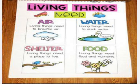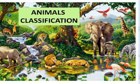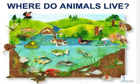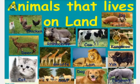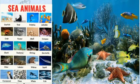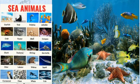Next is animal classification. As animals are different, they are classified into different categories. Where do animals live? Some animals live on land, just like cow, chicken, deer, cat, giraffe, and lion — they are the land animals. Some animals are water animals or sea animals. They live in the sea, just like fish, starfish, octopus, whale, and dolphin. These are the sea animals.